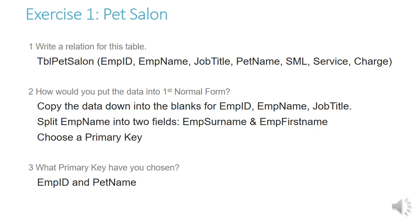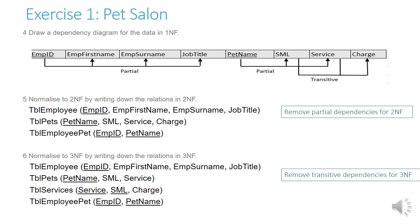For question 2, you would split EMP name into two fields — EMP surname and EMP first name — otherwise it is not atomic, which is a requirement of first normal form, and you would choose a primary key. For question 3, the primary key chosen is EMP ID and pet name. For question 4, the dependency diagram: we copy all fields into the long rectangle. An arrow goes from EMP ID to first name, surname, and job title — this is a partial dependency. An arrow goes from pet name to SML and service — also partial. The charge is dependent on SML and service, with the label 'transitive' as it's a transitive dependency.